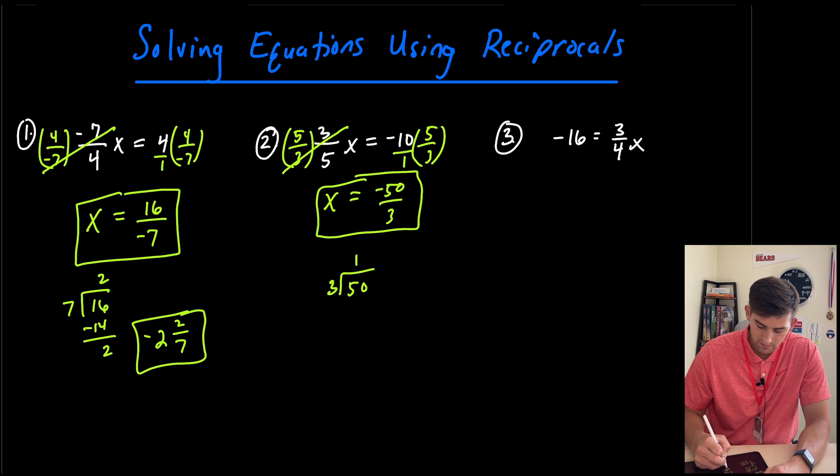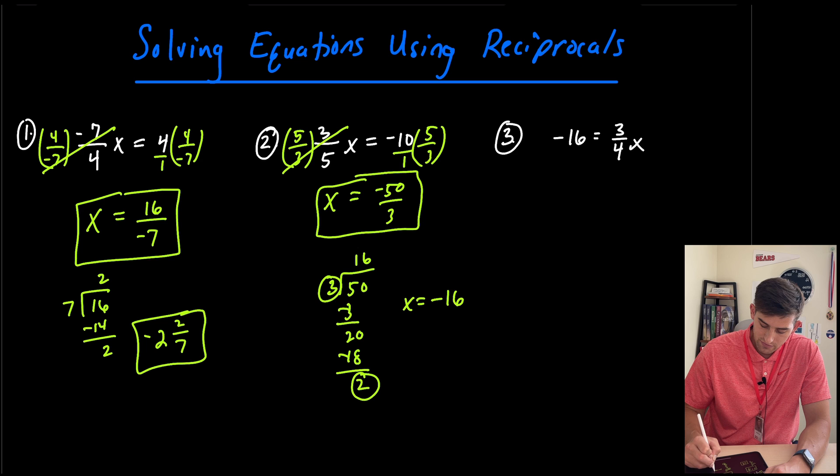Three will go into five one time, and five minus three would be two, we bring down the zero, and three will go into 20 six times, and that would be 18. So now once again, we have 16, so we could say x is equal to negative 16, and then we have two over three, so 16 and two thirds.